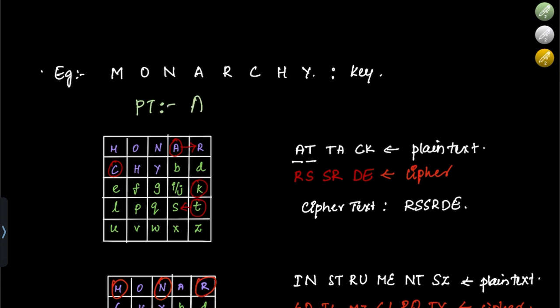The plain text given is ATTACK. We write it in pairs of two: AT is the first pair, TA is the second pair, and CK is the third pair.